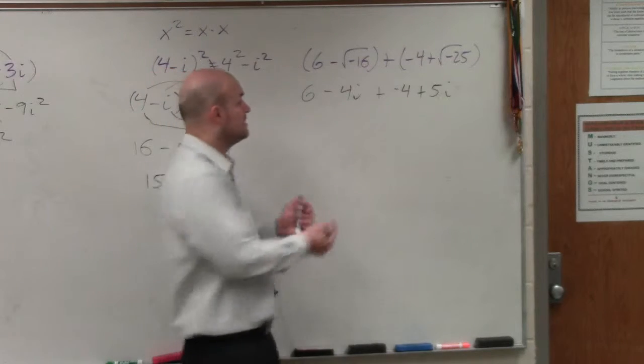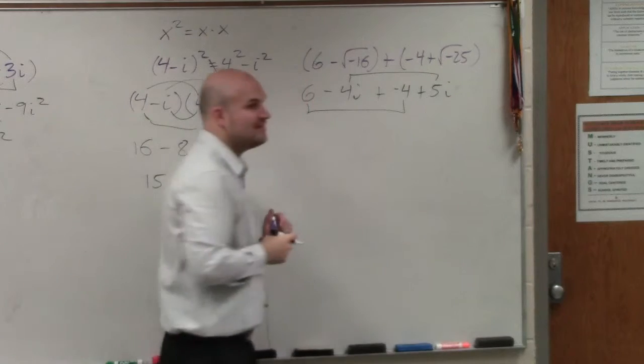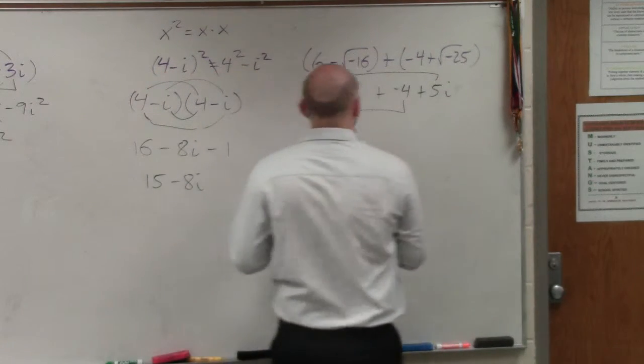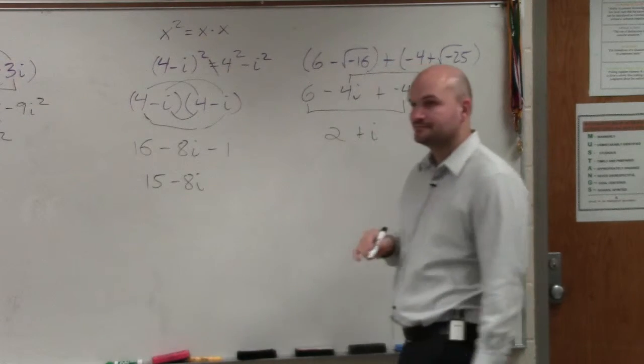Now, when you're combining complex numbers, you can only combine real numbers with real numbers and your imaginary numbers with your imaginary numbers. So 6 minus 4 is going to be 2. Negative 4i plus 5i is going to be positive i. OK?